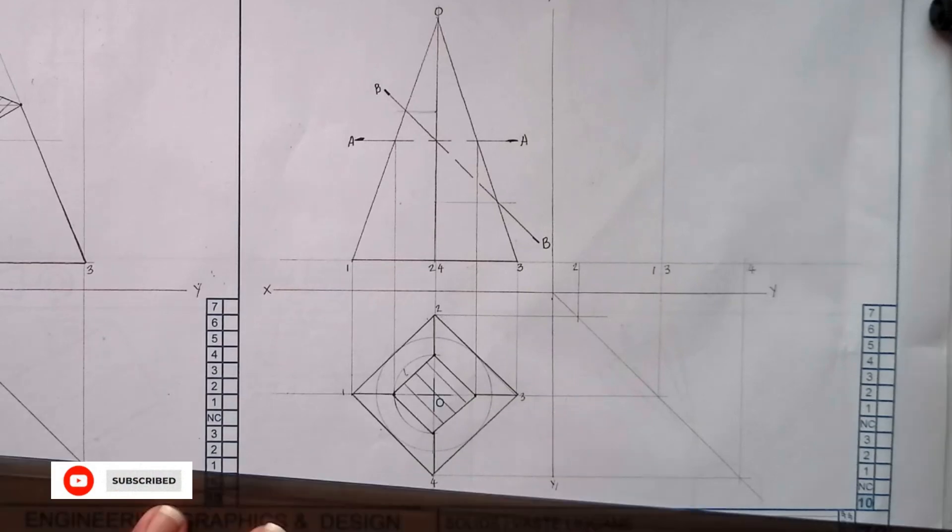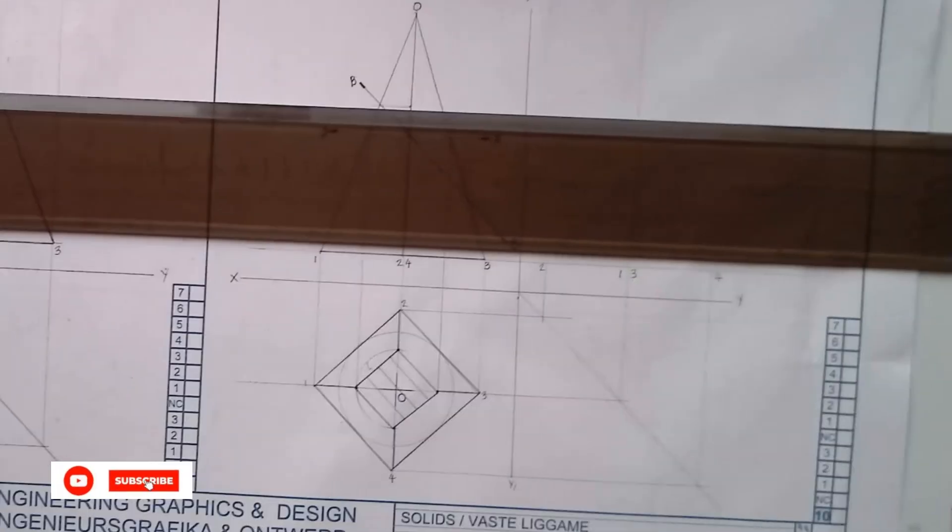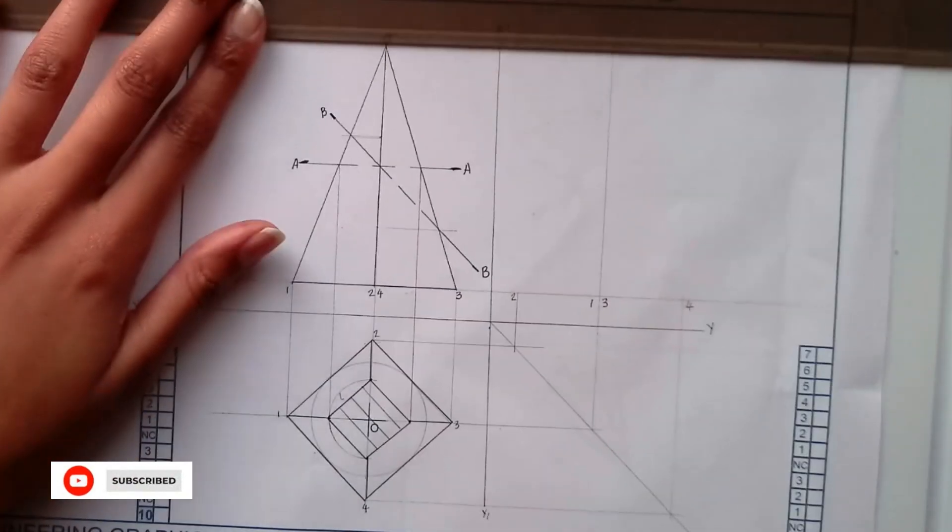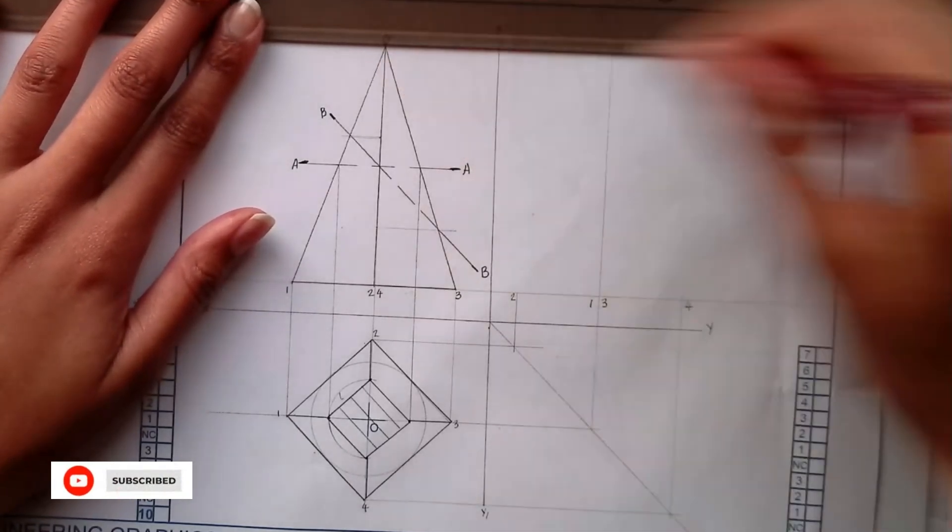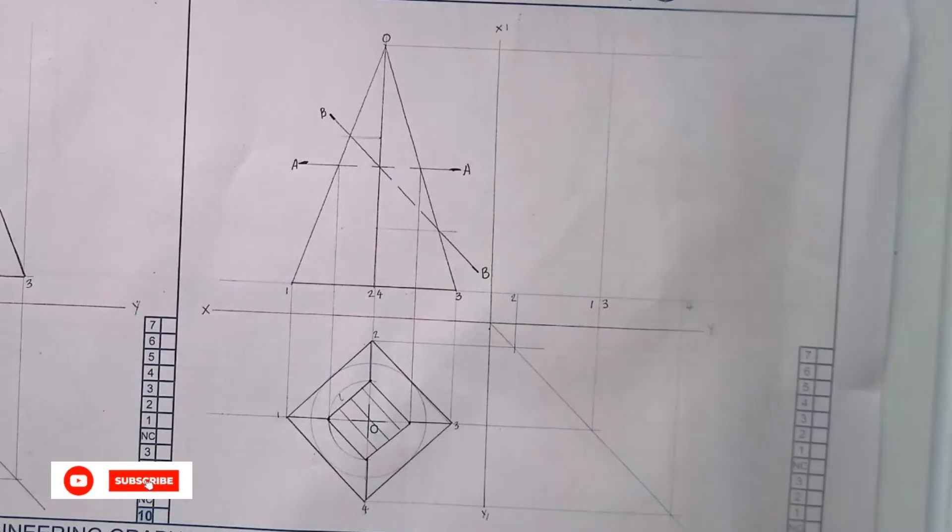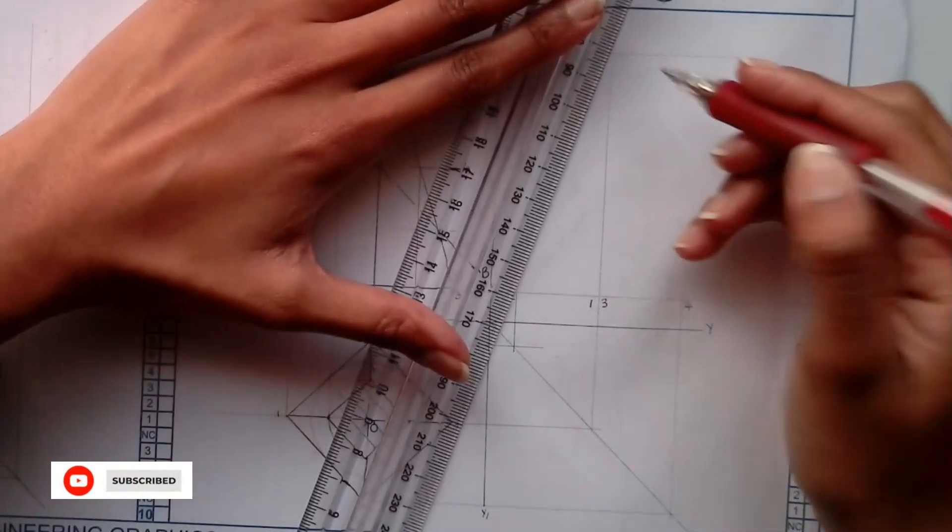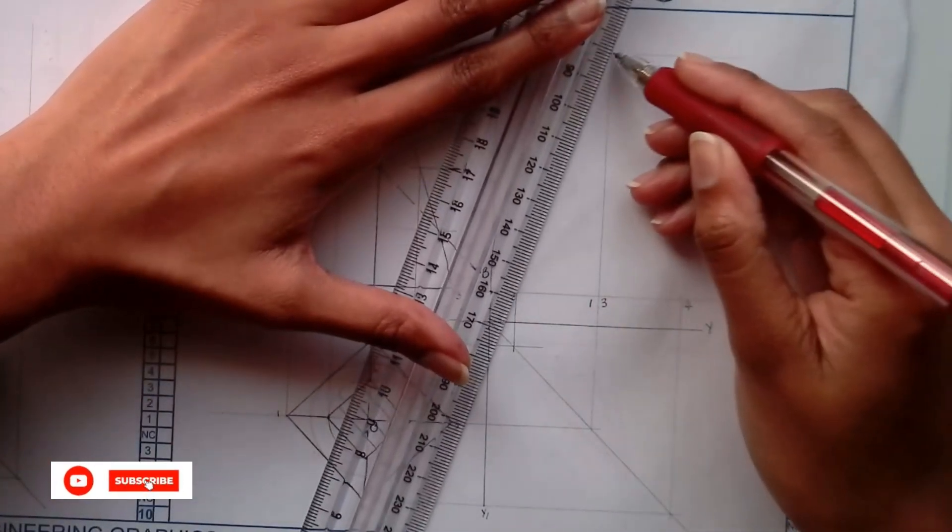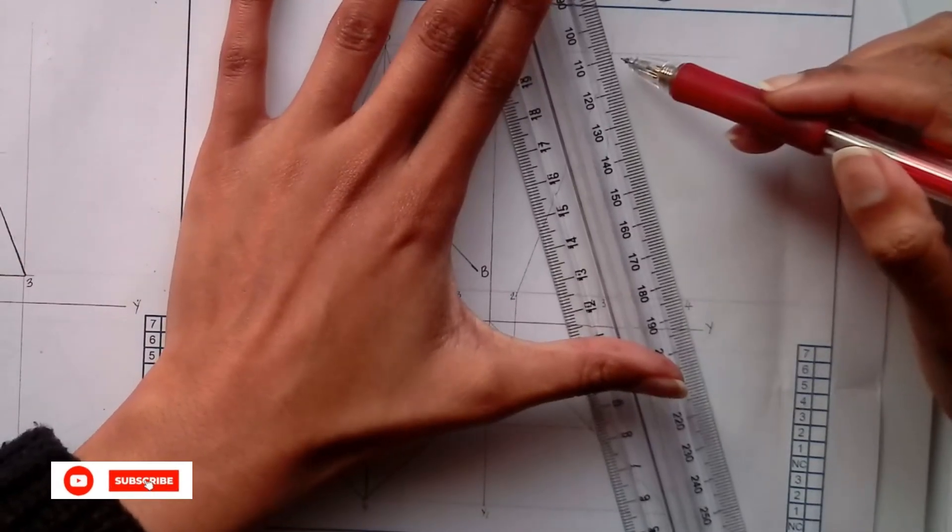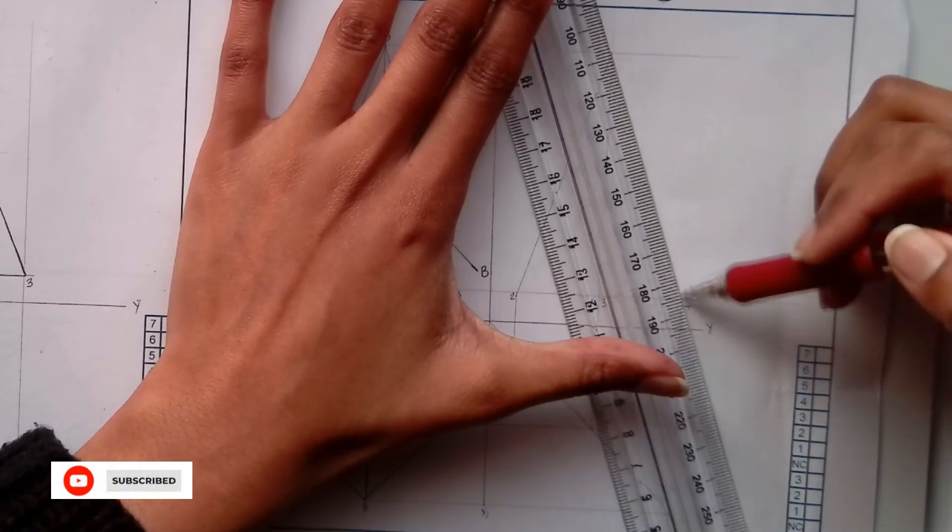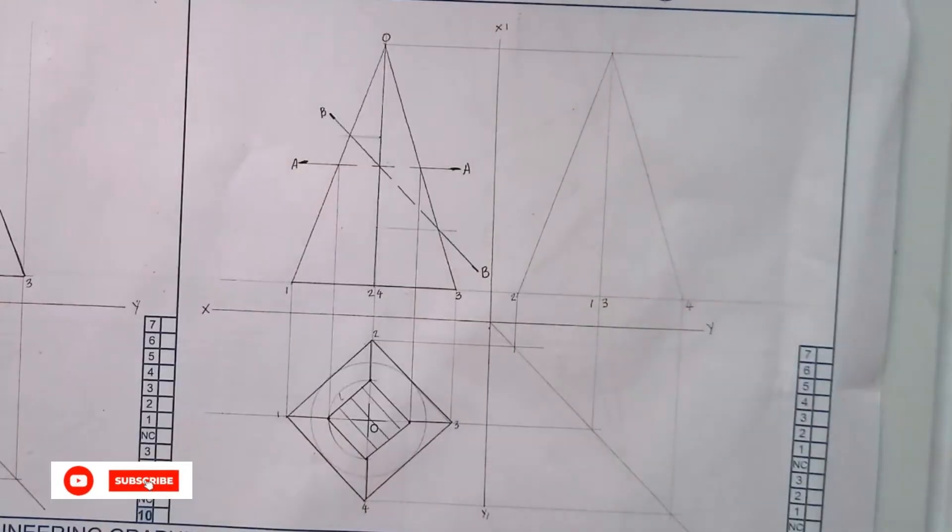Then your height. Then you will get your pyramid in triangular format like that. Then you have your O at the top.